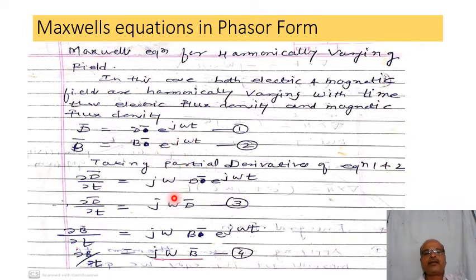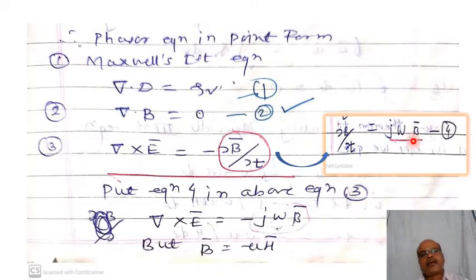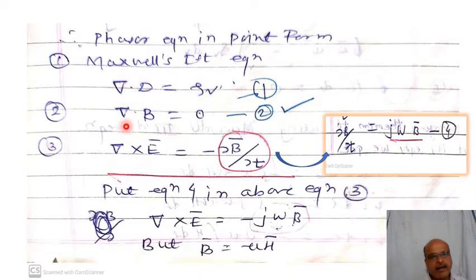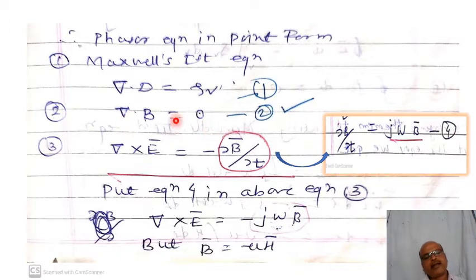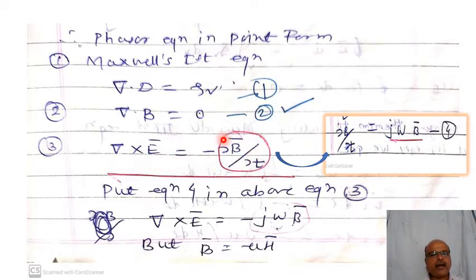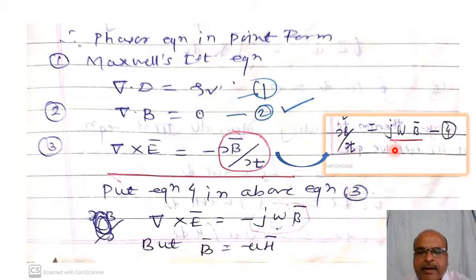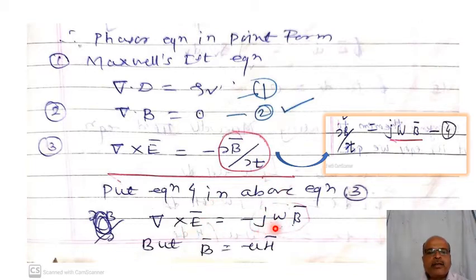Next, phasor equations in point form. Maxwell's first equation remains the same: del-dot D equals rho, meaning divergence of electric flux density equals volume charge density. Maxwell's second equation: del-dot B equals zero, meaning divergence of magnetic flux density equals zero. For the third equation from the time-varying field, del-cross E-bar equals minus partial B by partial t. Since partial B by partial t equals j-omega B, substituting gives del-cross E-bar equals minus j-omega B-bar.